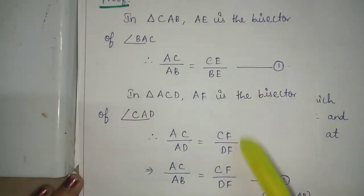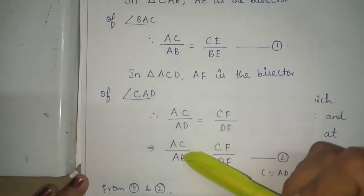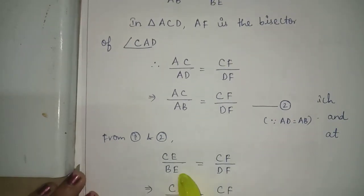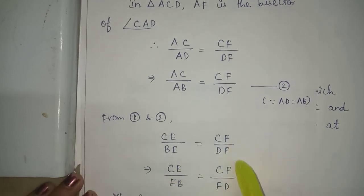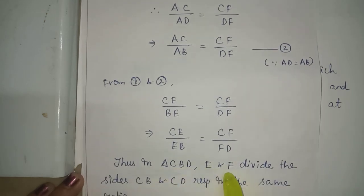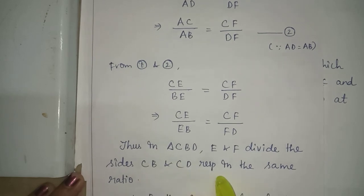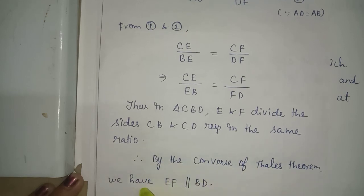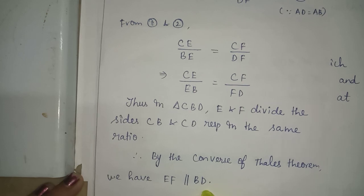Comparing equations 1 and 2, both left-hand sides are equal, so we equate the right-hand sides: CE by BE is equal to CF by DF. Thus in triangle CBD, E and F divide sides CB and CD respectively in the same ratio. Therefore by the converse of Thales theorem, EF is parallel to BD. Hence proved.